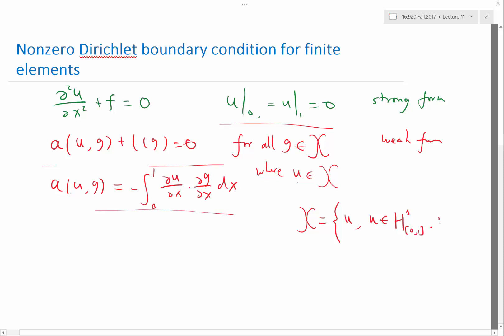And the boundary condition appears here. And that u at 0 equal to u at 1 has to be equal to 0. So how our zero Dirichlet condition appeared was in this space, which we define both the solution and the test function.